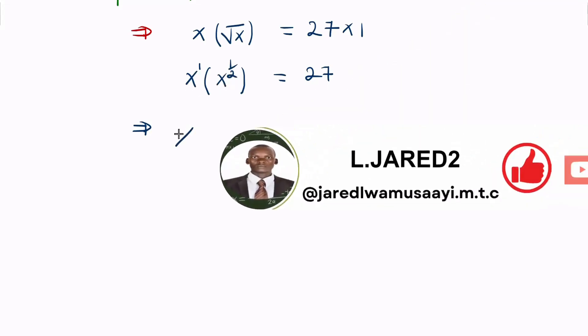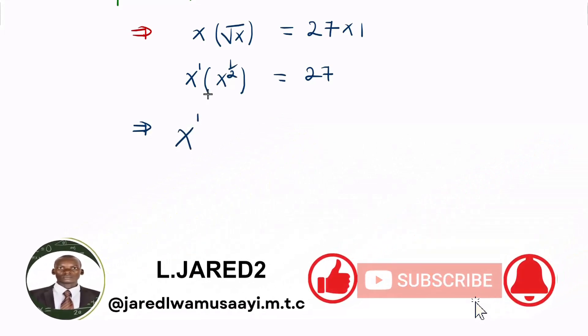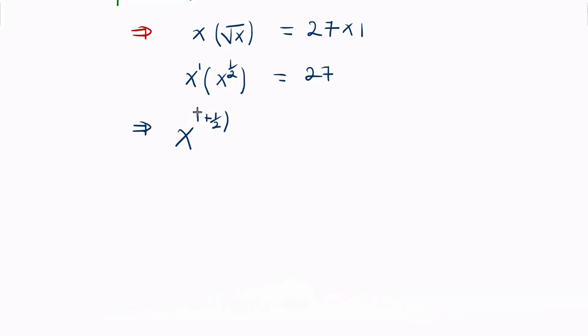This means we have x raised to power 1. Since it's multiplication, we add the powers. So we have 1 plus one-half giving us 27.